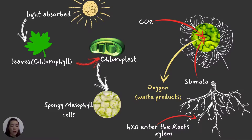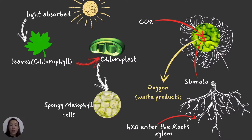The water enters through the roots via the xylem. The xylem is the tube responsible for carrying water from the roots to the different parts of the plant. As photosynthesis happens, glucose is the product, and oxygen is the waste product.